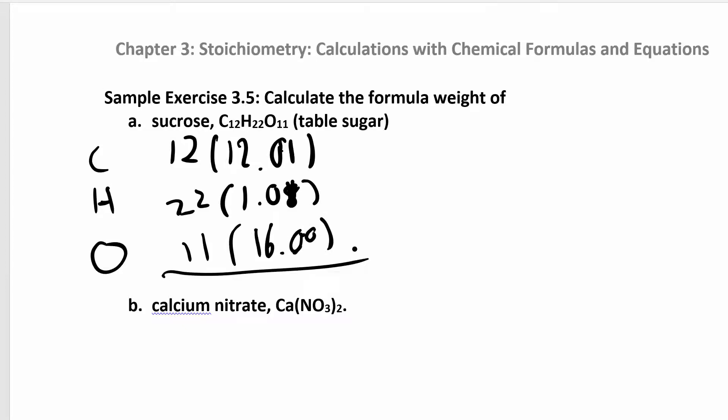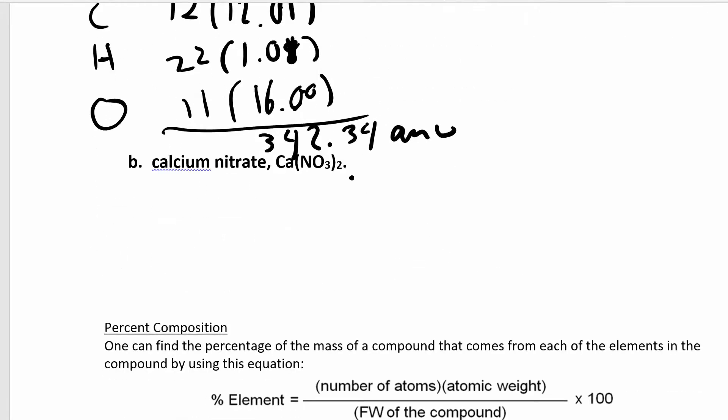When you add all that up, you should get 342.34 atomic mass units. Then do the same thing for calcium nitrate. Be careful with calcium nitrate. This 2 means you have 2 of the nitrates, 2 nitrogens, and 6 oxygens. Still only 1 calcium because that 2 only gets distributed to whatever's inside the parentheses.